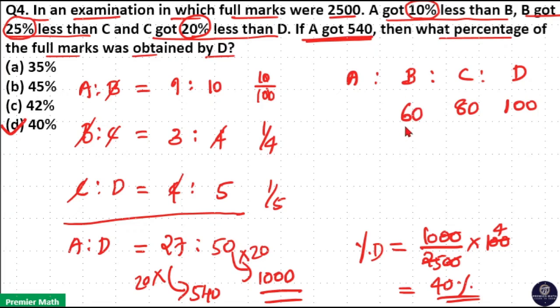Again, A got 10 percentage less than B. Here 100 percentage is 60, 10 percentage is 6. That means 10 percentage less than B means 10 percentage is 6. So 60 minus 6, 54. A got 54 marks.